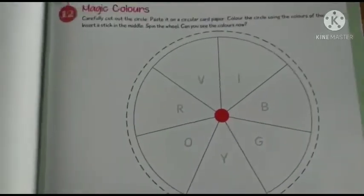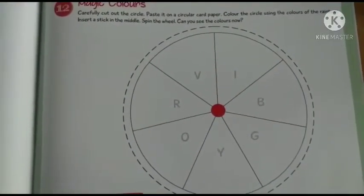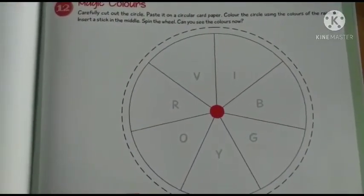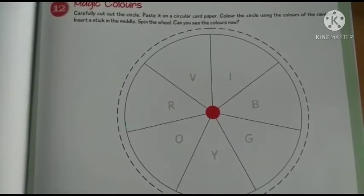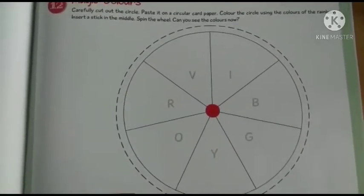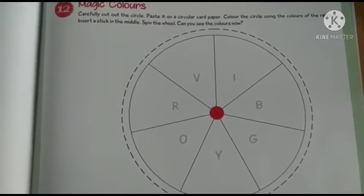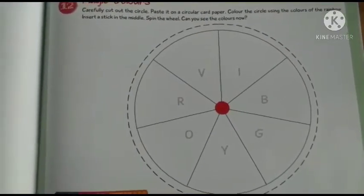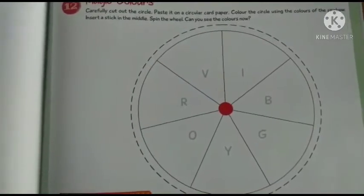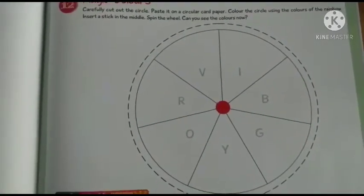Phir uske baat yaha jho circle hai na, to kya karna hai circle ko? Insert, sorry. Color the circle using the colors of the rainbow. Insert a stick in middle. Then spin the wheels.